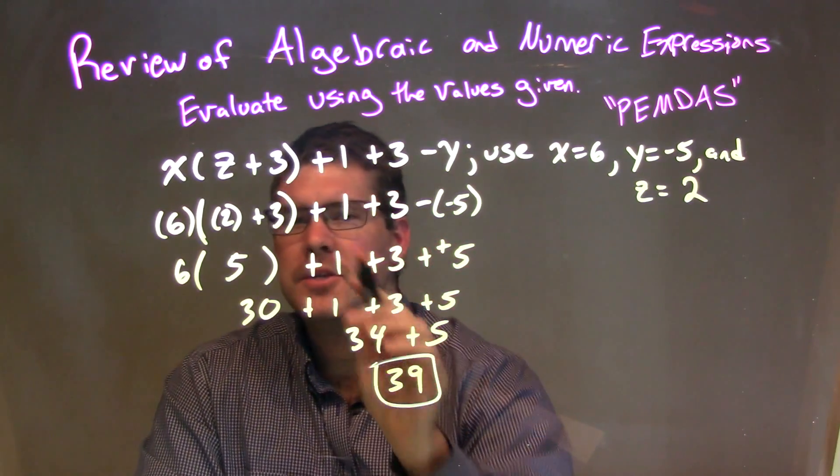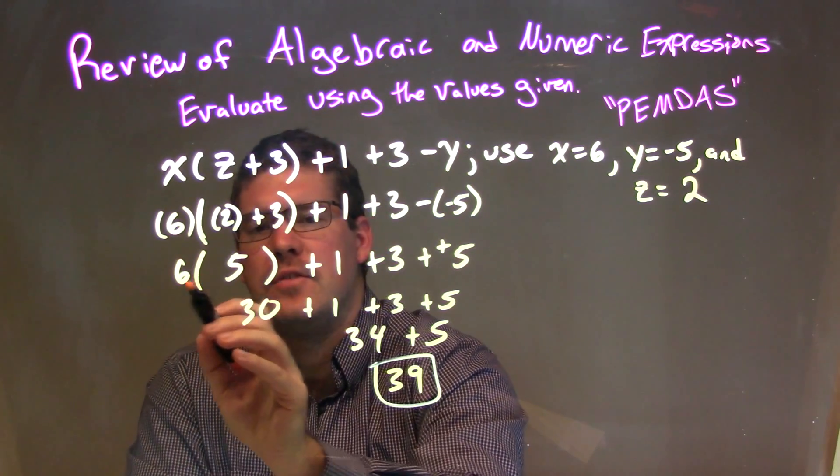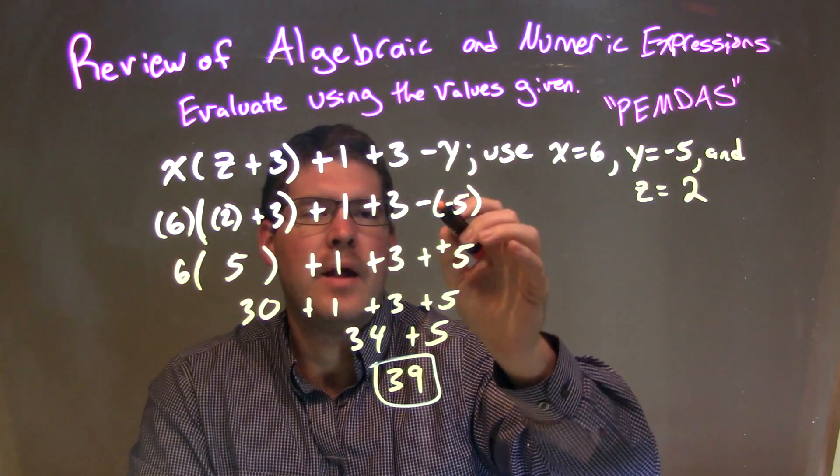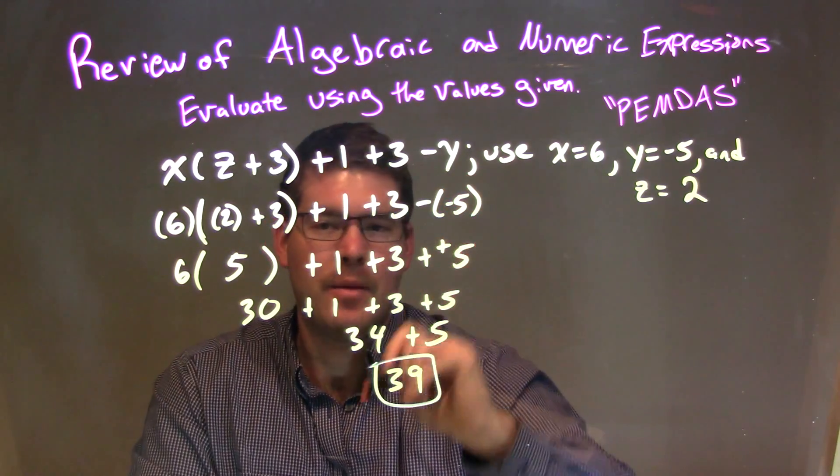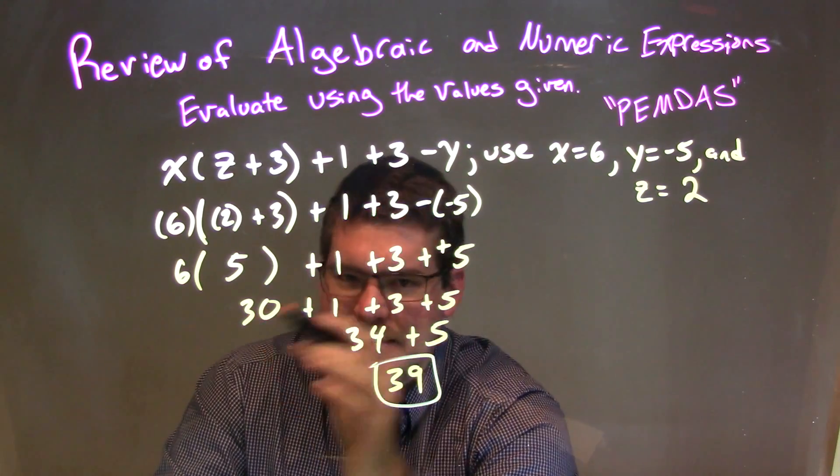I then followed my order of operations. Inside the parentheses was first, 2 plus 3 was 5. Then, I had multiplication 6 times 5 to be 30. During that step, or earlier, I made this subtracting negative to be adding a positive. At this point, though, I had 30 plus 1 plus 3 plus 5. I just added it across the board.